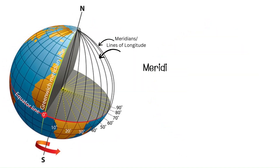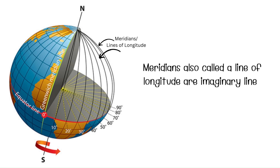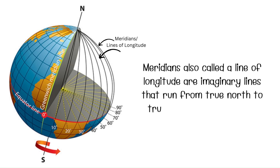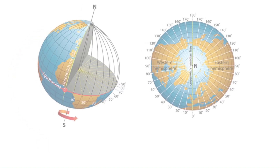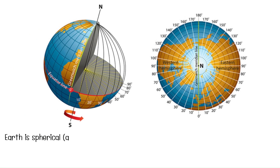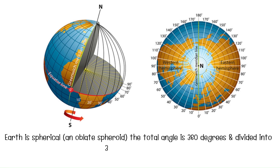Meridians, also called lines of longitude, are imaginary lines that run from the true north to the true south poles along the earth's surface. As the earth is spherical — to be more exact, an oblate spheroid — the total angle is 360 degrees, and hence the longitudinal lines are placed at a gap of 1 degree, giving a total of 360 longitudinal lines. These longitudinal lines are measured from 0 degrees to 360 degrees. This is the basic concept of meridians.